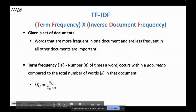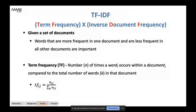Moving on to TF-IDF — this is the first model I'm going to talk about. It's a relatively simple but smart model. The acronym stands for Term Frequency multiplied by Inverse Document Frequency. Given a set of documents, the idea is that words that are more frequent in one document and less frequent in all other documents are important.